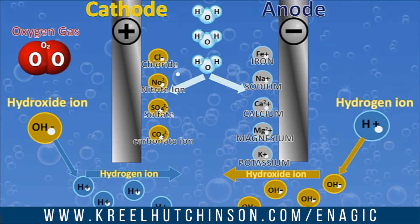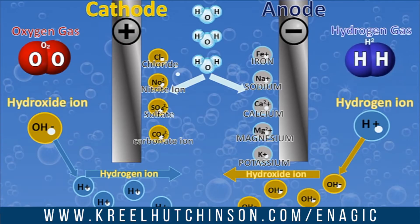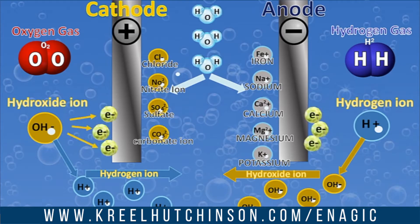What happens then is we're creating oxygen gas on this side and hydrogen gas on the other side. So electrolyzed reduced water is happening right in front of us. The way we create this hydrogen ion is we release the electron that's in this molecule — and electrons being donated to us is what we want.